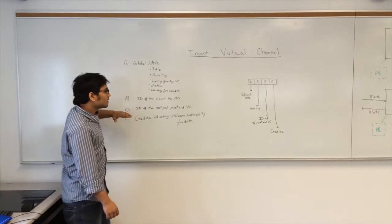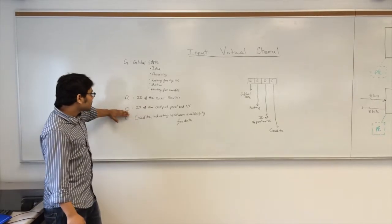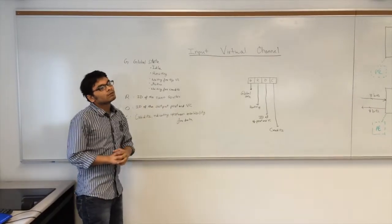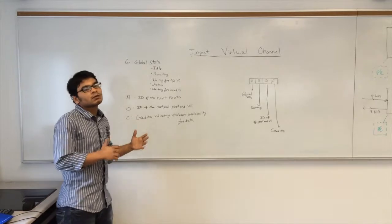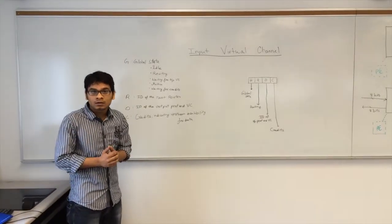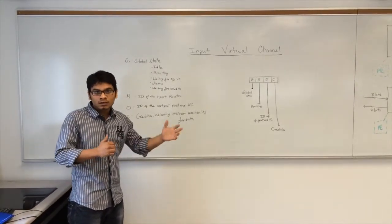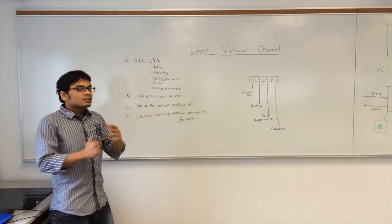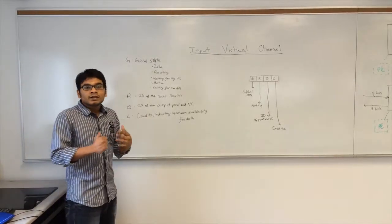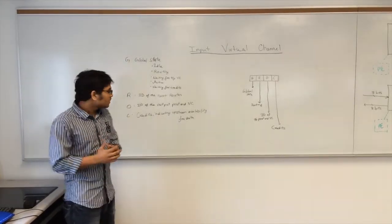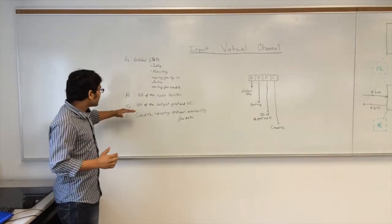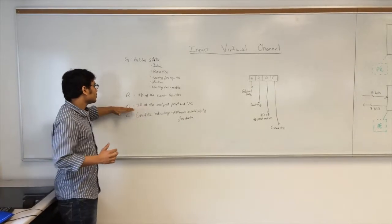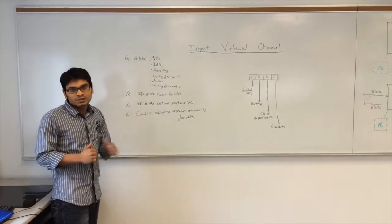For the ID of the output port field, it's the same case: when the virtual channel requests the VC allocator to allocate a VC at the output port, and it gets back the ID of the VC when a VC is allocated,